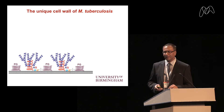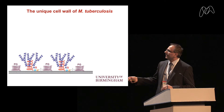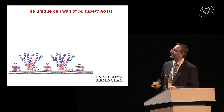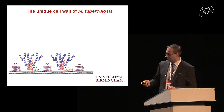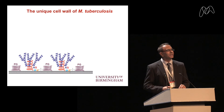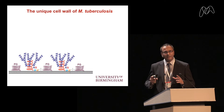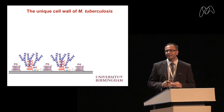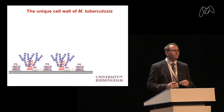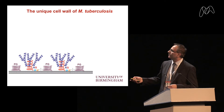The galactose in arabinogalactan is in the furanose ring form. Attached precisely at the 8th, 10th, and 12th positions of that galactan backbone — which stretches for around 25 sugar residues — we have three segments of arabinogalactan, each consisting of around 25 arabinose residues, also in the furanose ring form. These make up a variety of structural motifs with different linkages: alpha-1,3; alpha-1,5; and beta-1,2, catalyzed by different glycosyl transferases.